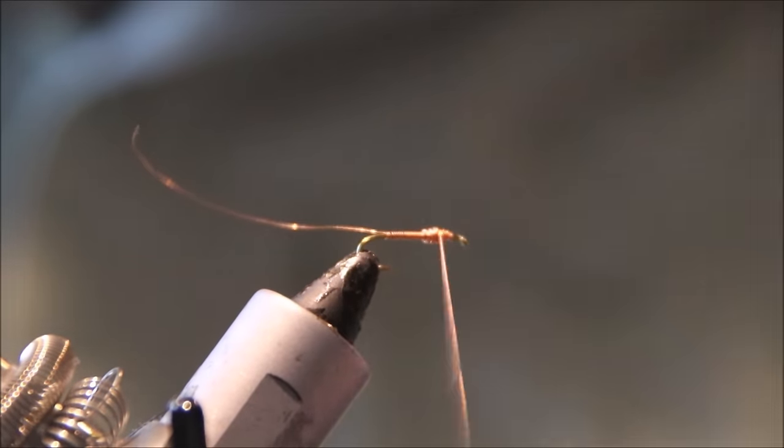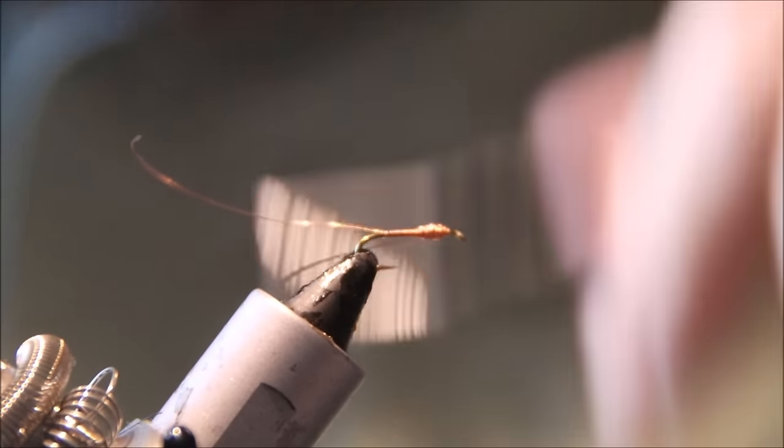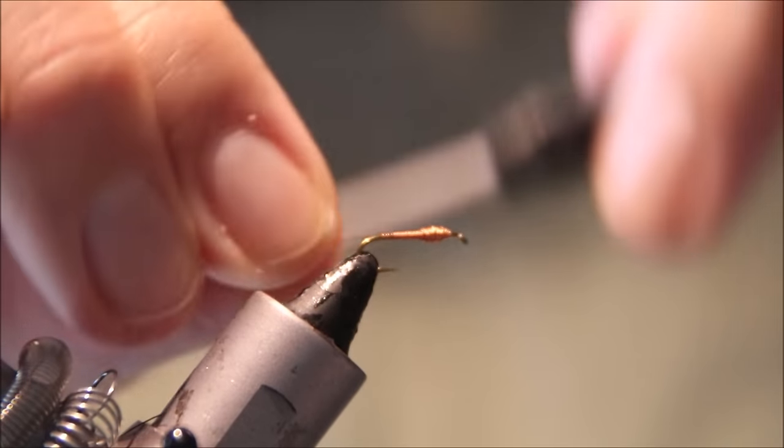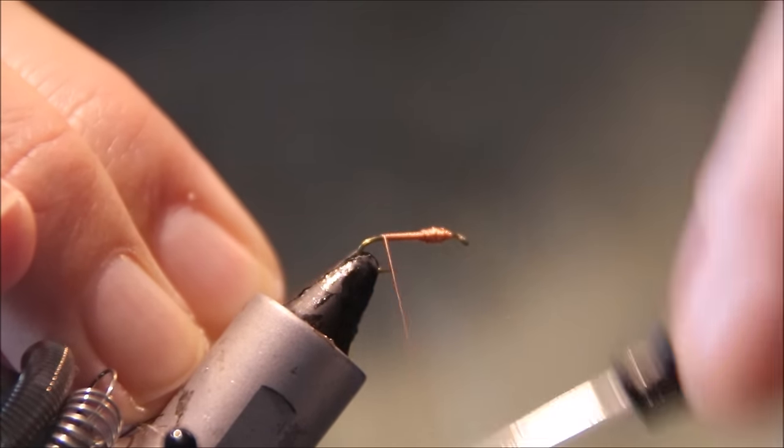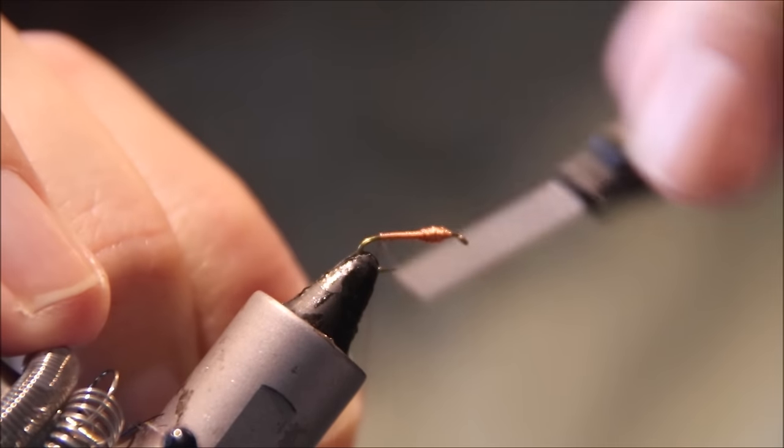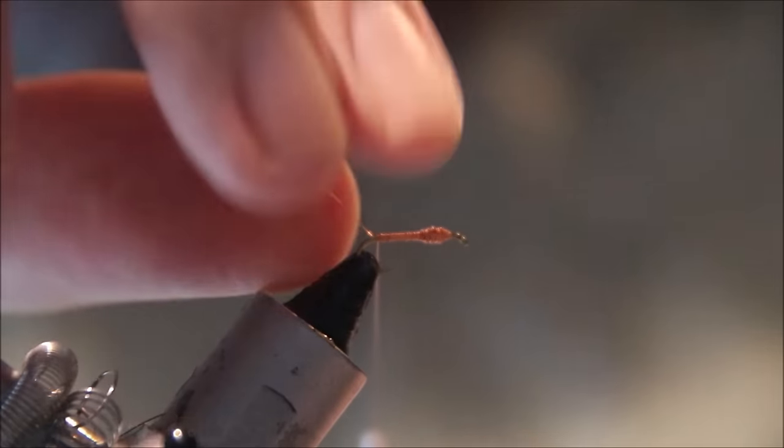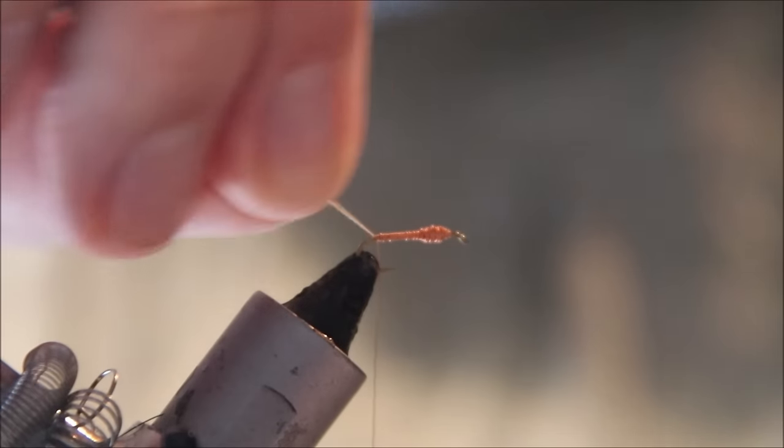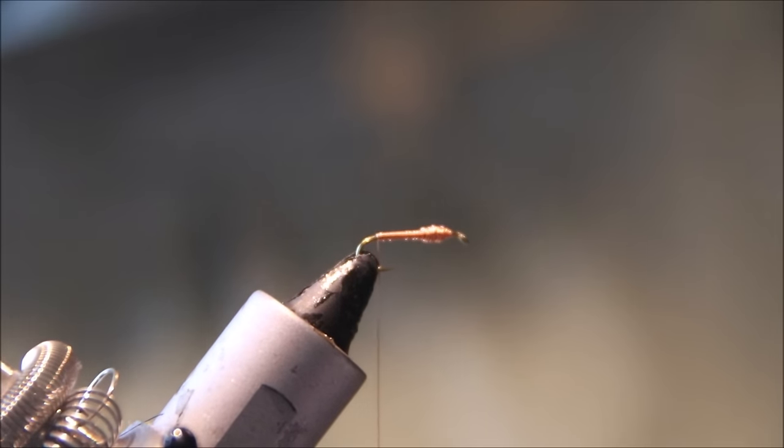If you think about it, this is really a Baetis imitation, or any sort of free swimming mayfly nymph. Then just run your thread back in touching turns. I like to lock down my tag end with two or three wraps. That takes me back to just about the start of the bend. Just helicopter and break the waste piece.